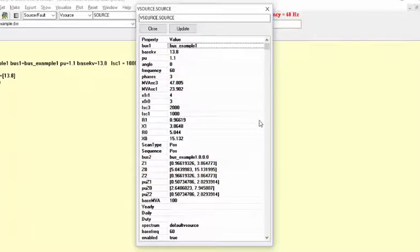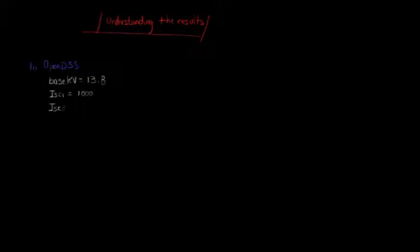As you can see, the values of MVASC1, MVASC3, Z1 and Z0 have changed in accordance to the values of ISC1 and ISC3. Let's understand the values presented on this table. In the example created, we have set the basekV equal to 13.8, single-phase line-to-ground short-circuit current equal to 1000 and three-phase short-circuit current to 2000. We have already deduced some expressions based on the single-phase line-to-ground and three-phase faults, which are summarized below as 1, 2 and 3.